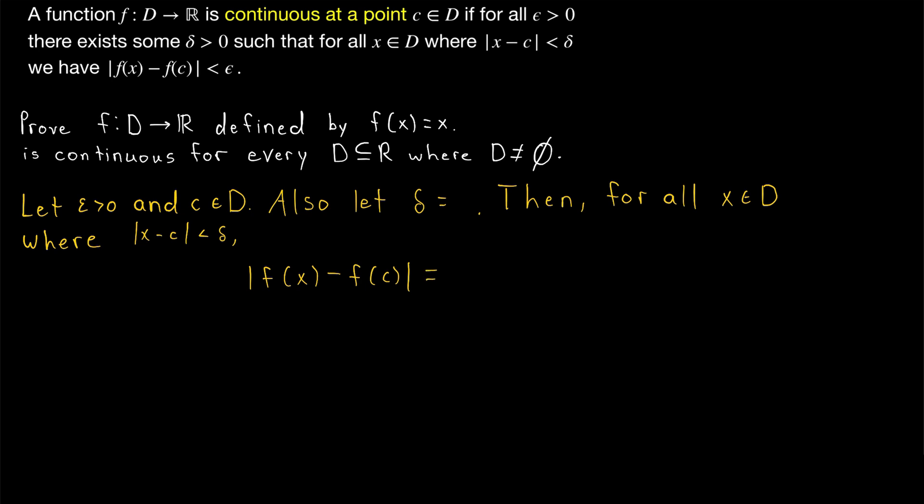By definition of our function, that it's the identity function, the absolute value of f of x minus f of c is equal to the absolute value of x minus c, because f of x equals x and f of c equals c. But then this is perfect, because the absolute value of x minus c has to be less than delta, and we can make delta whatever positive real number we want. So let's set delta equal to epsilon, and that will make this proof work.